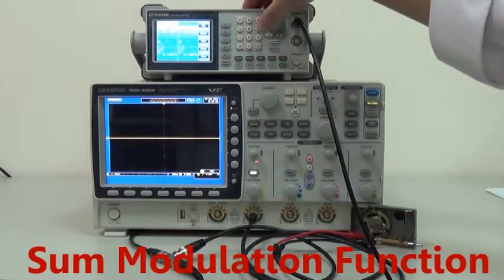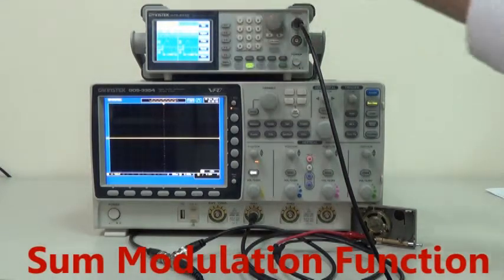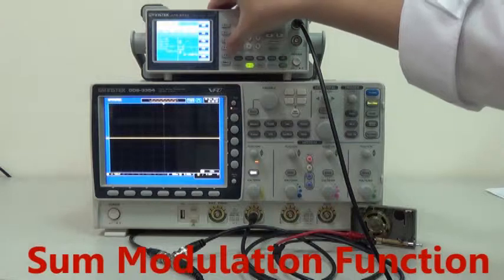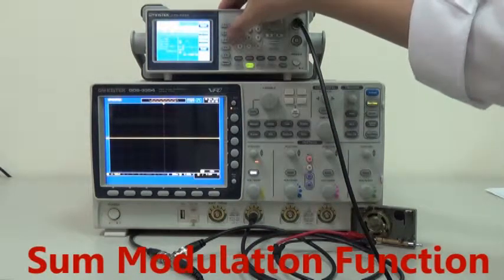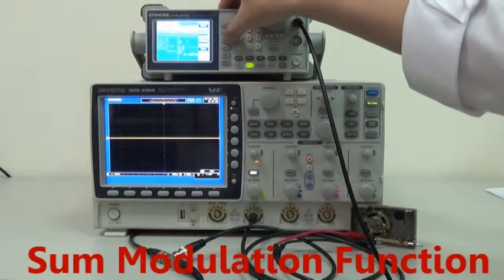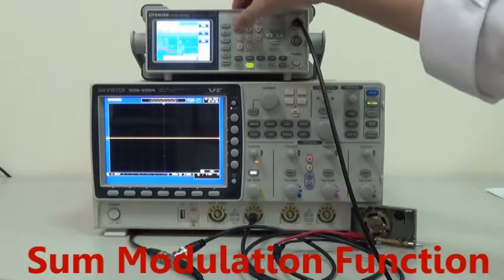Press modulation. Press sum F5, then press sum frequency F3 and enter 1 kHz.